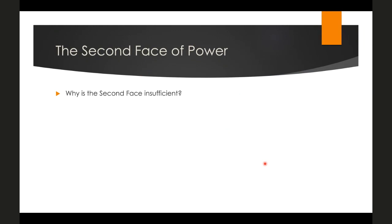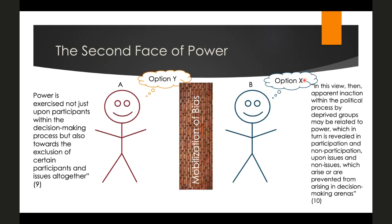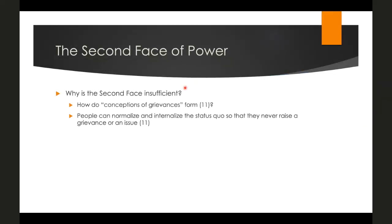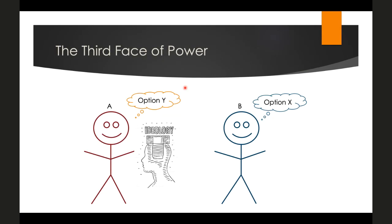Why is the second face of power insufficient? It doesn't give us an account of how conceptions of grievances themselves form — how do people even arrive at this divergence between option X and option Y? Additionally, Gaventa argues that people can normalize and internalize the status quo, such that they never even recognize there's a problem in the first place. That's where he introduces the third face of power: ideological power, which we can also think of as cultural power.